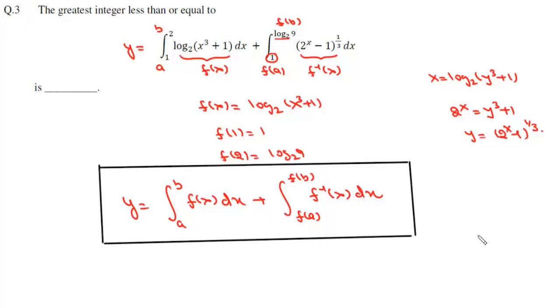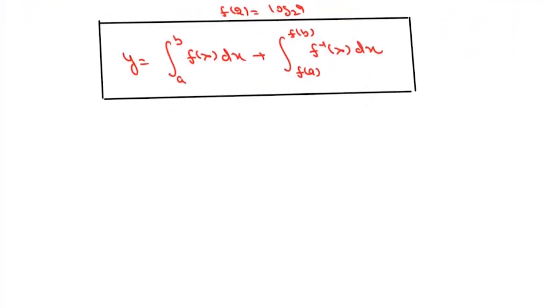Now what we'll do is solve this second integral by taking a substitution. We'll let x as f(t), then dx will be f'(t)dt.